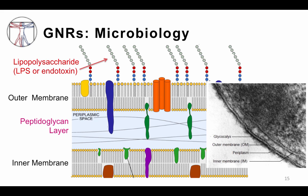Particularly when gram-negatives enter the bloodstream. To reinforce the translational concept: LPS is a potent stimulator of the immune system. This molecule is also called endotoxin and differentiates gram-negatives from gram-positives. The last thing to draw your attention to is a structure in the gram-negative outer membrane called a porin, which allows passage of small molecules, including some antibiotics. Porin mutations are one important mechanism of antibiotic resistance in some gram-negative bacteria. And yes — LPS, or endotoxin, is an important stimulator of the immune system.